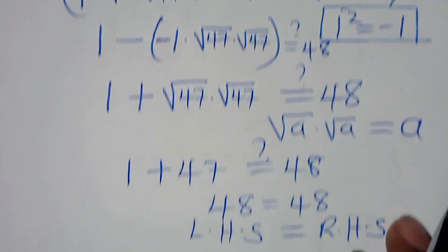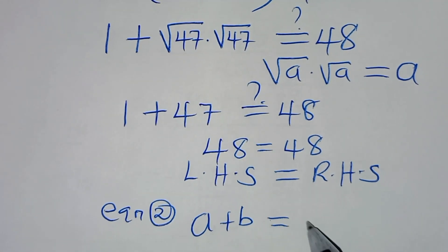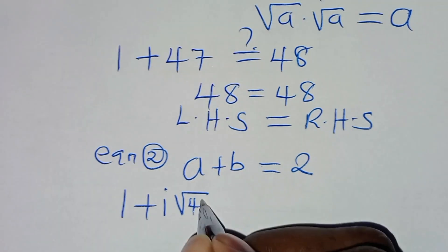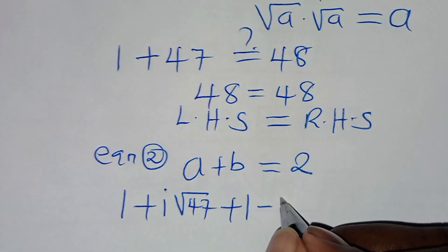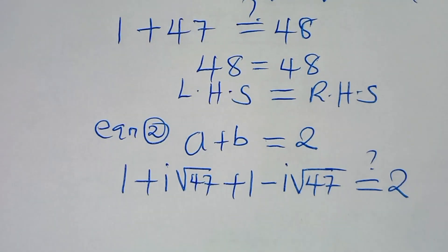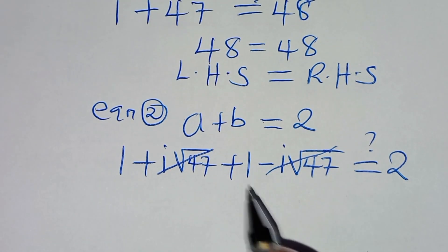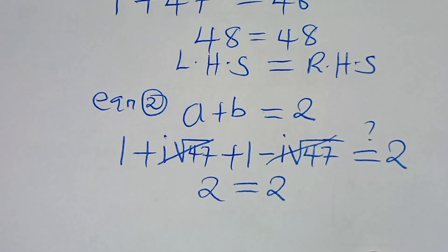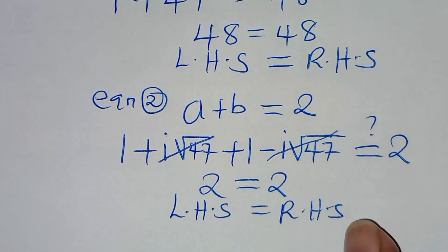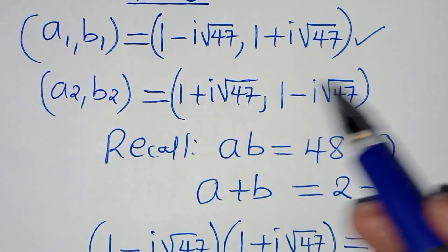From equation 2, a plus b should equal 2. Substituting a2 and b2: (1 plus i√47) plus (1 minus i√47). The i√47 terms cancel, leaving 1 plus 1 equals 2, which confirms the left-hand side equals the right-hand side. Therefore both solution pairs a1, b1 and a2, b2 satisfy both equations.